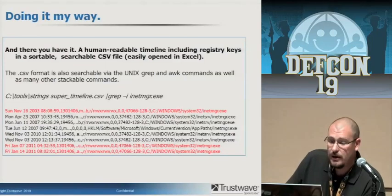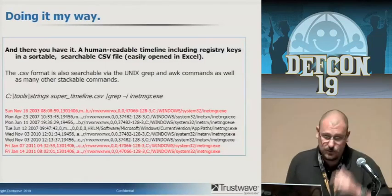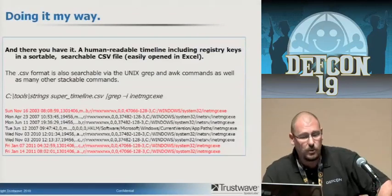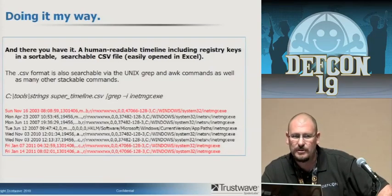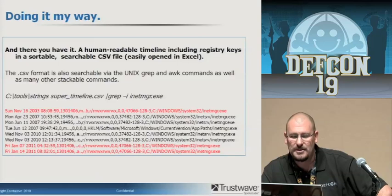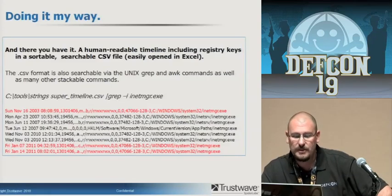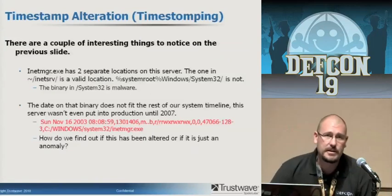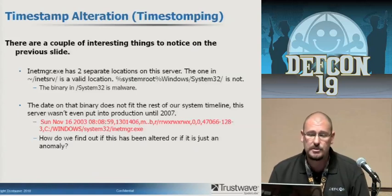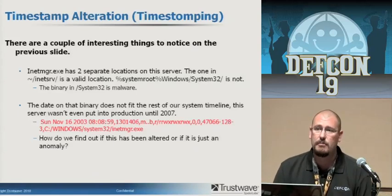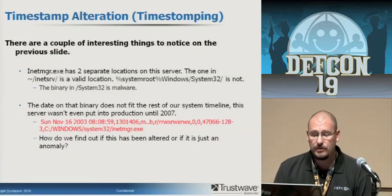Here's a nice example of what it looks like in text when you do a grep search. Remember I said we'd see that inetmanager again? There are several timestamps here, and you see one from 2003, which is really odd because this machine wasn't even built until 2007. You also see two paths — System32\inetmanager and System32\inetserv — with the same executable name. Definitely odd. The binary in System32 is actually memory-dumping malware, and the date on the binary doesn't fit the rest of the system timeline.